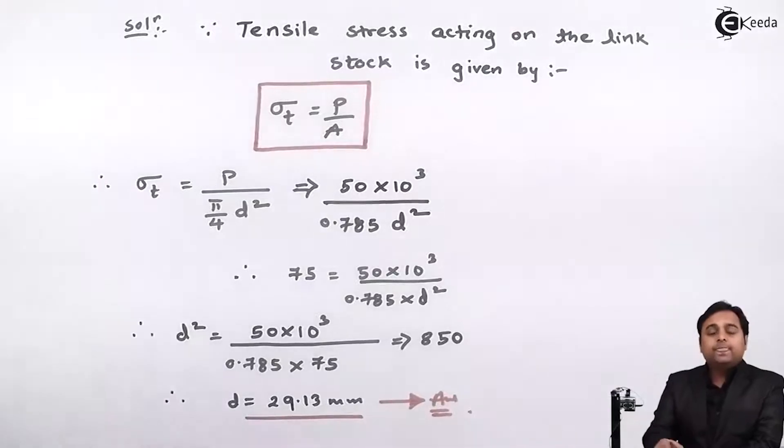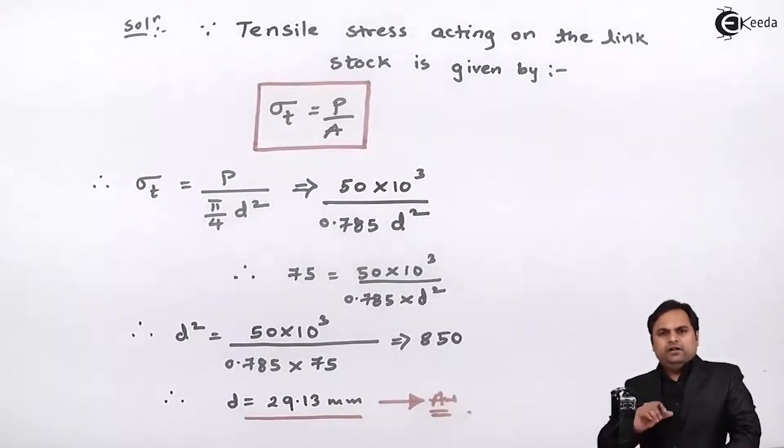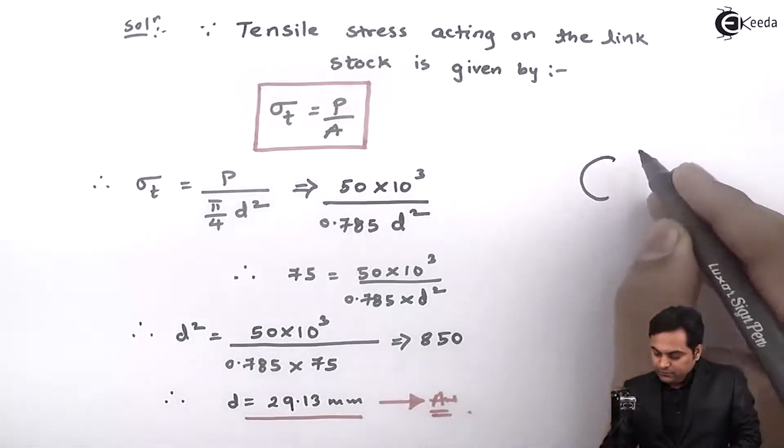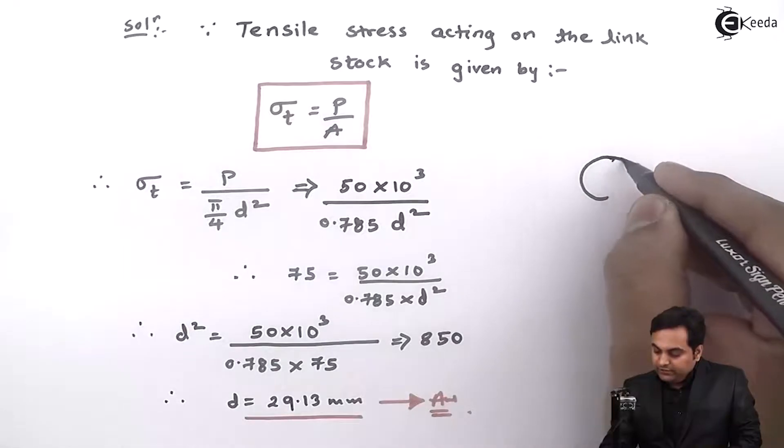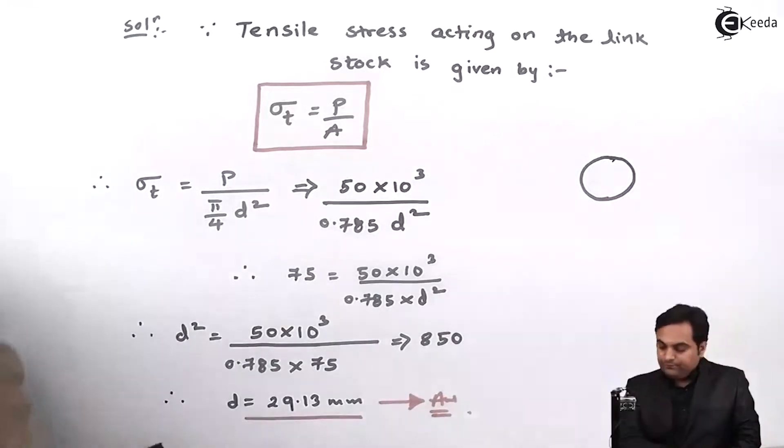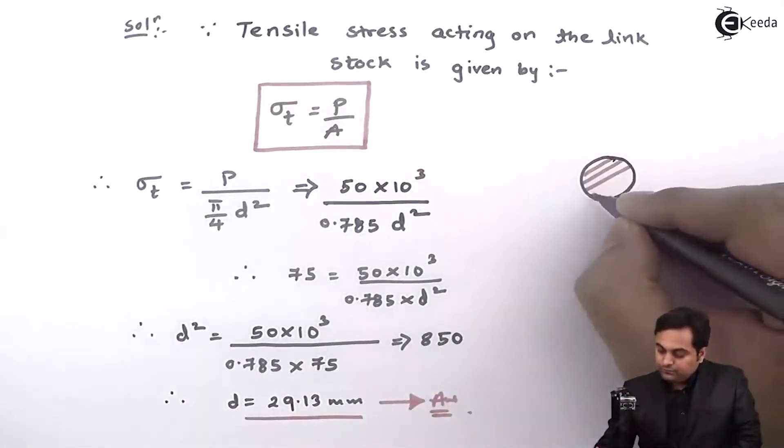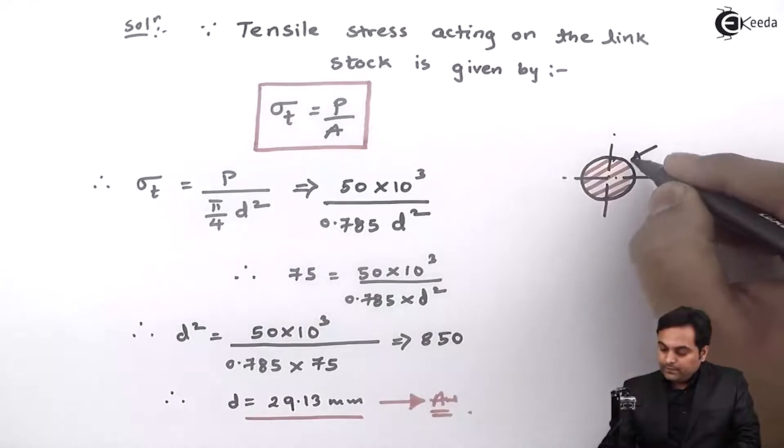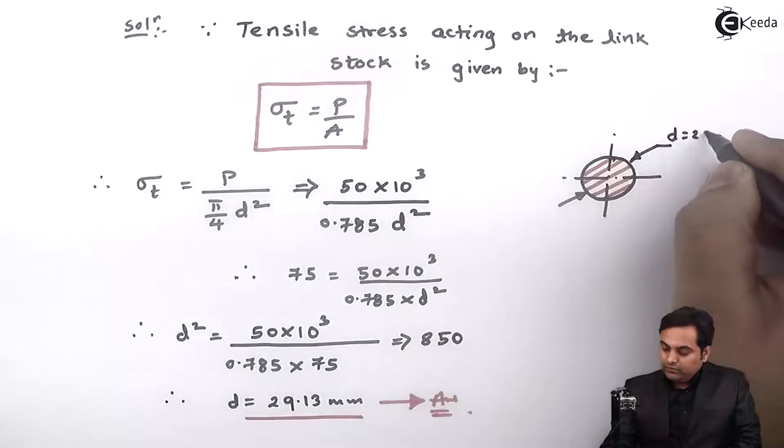So here if we have a link stock, then it should have a diameter of 29.13 mm. This is the cross section of the link stock, it should have diameter d equal to 29.13 mm.